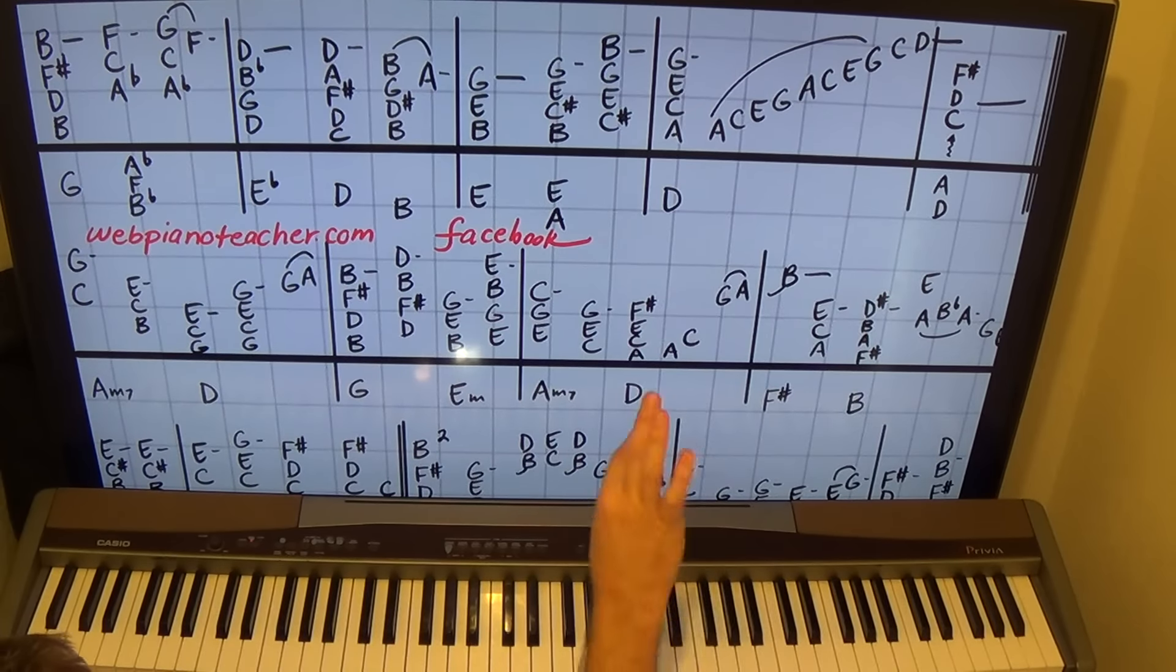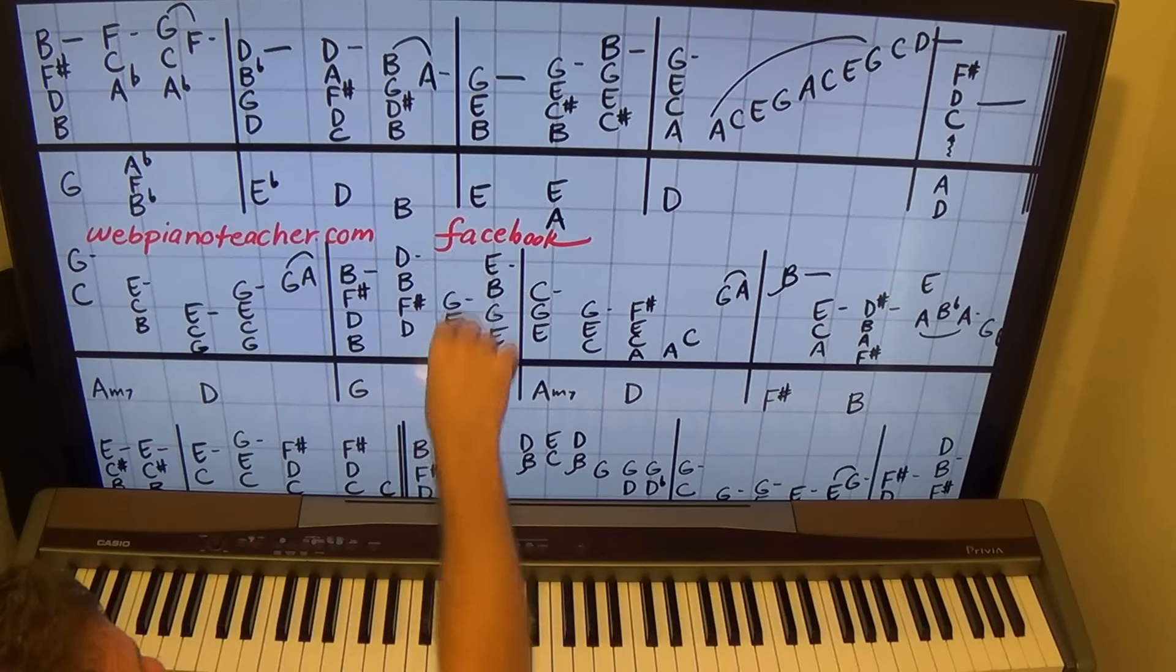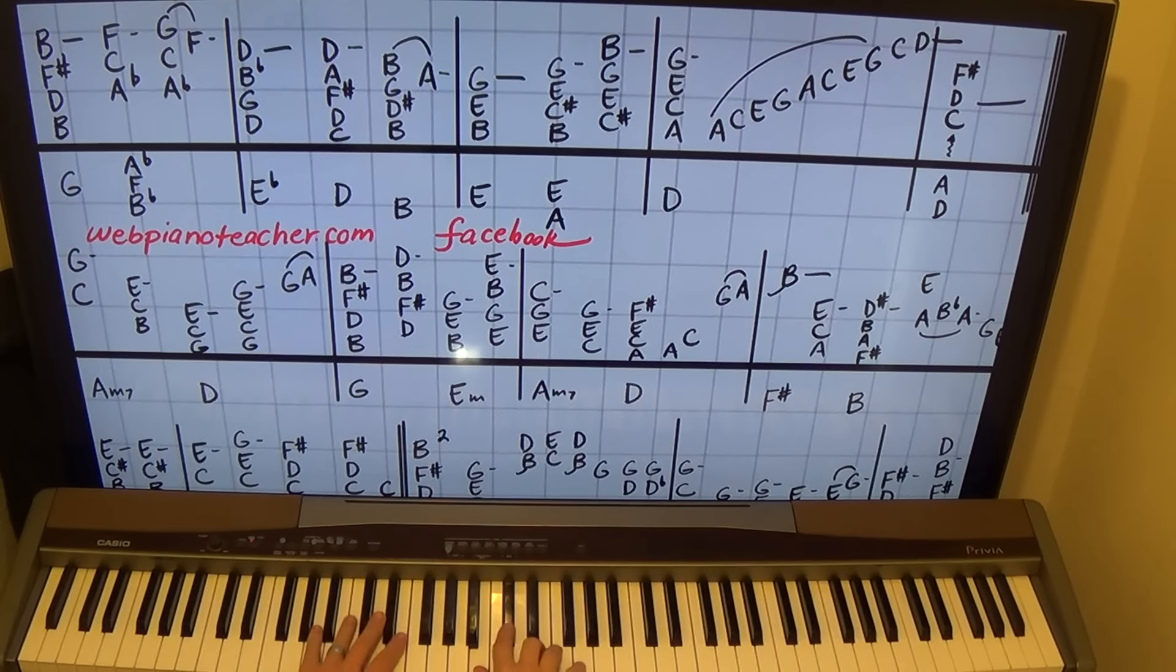3, count 4 will be up high for a little frosting on the top. We come up to C sharp, E, G, B with 1, 2, 3, and 5. Count 4. So, 1, 2, 3, 4, 1.